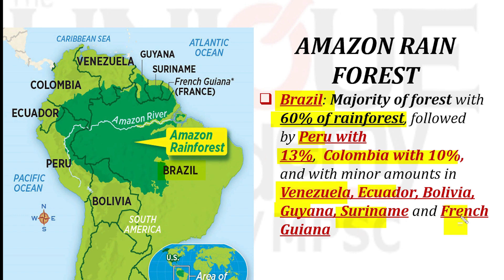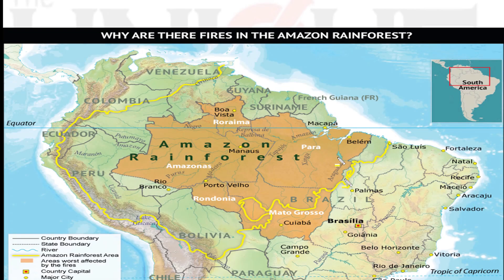UPSC and MPSC may ask a simple question about where the Amazon rainforest is situated. It is also important to remember which Latin American countries do NOT have the Amazon rainforest. For example, Chile — despite being a large country — does not have Amazon rainforest. Similarly, Argentina does not have it, and neither does Paraguay. So Chile, Argentina, and Paraguay are three important countries where the Amazon rainforest is absent.